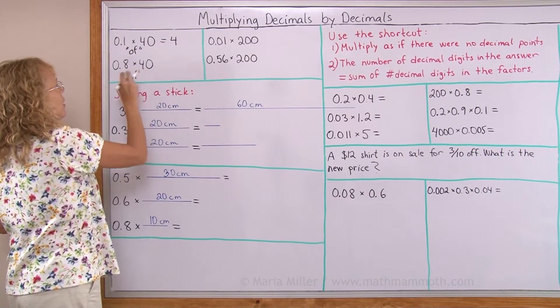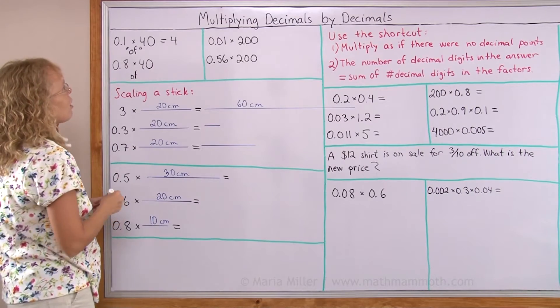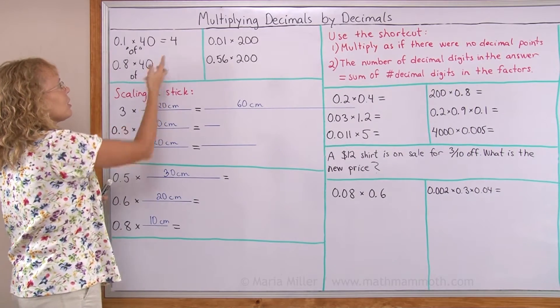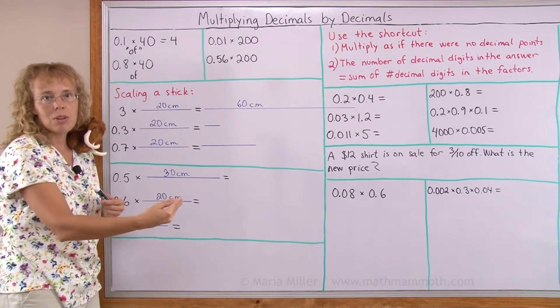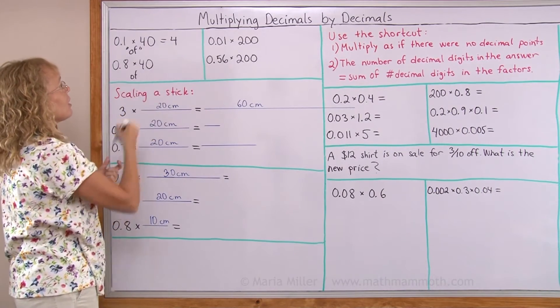Here again we have 8 tenths of 40. And since we already solved what's 1 tenth of 40, 1 tenth part of 40 is 4, then 8 tenths of 40 would be 8 times that result, right? So it's 32.